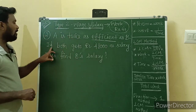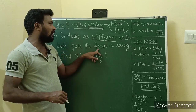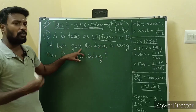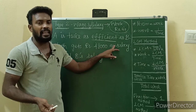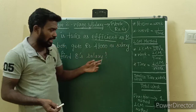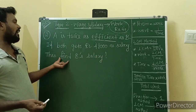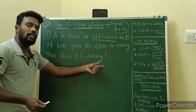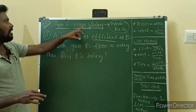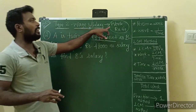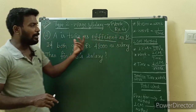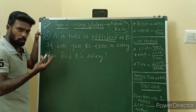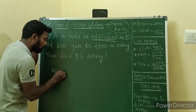If both of them get Rs.48,000 as salary, then find B's salary. We know the work ratio — since A is twice as efficient as B, we know the efficiency, so we can find the work ratio.